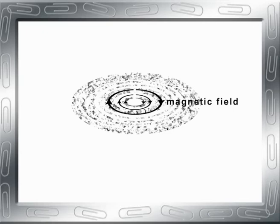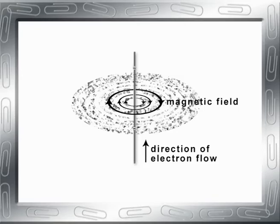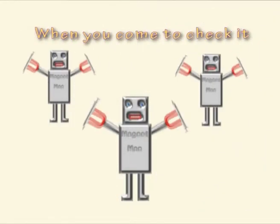If you take some iron filings and scatter them around and they form a pattern, it's possible you've found a magnetic field in the vicinity created by a source of electricity.